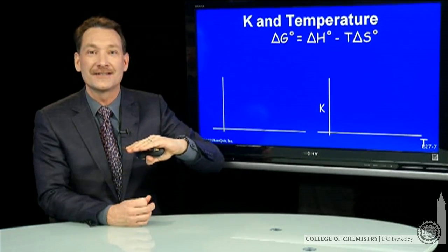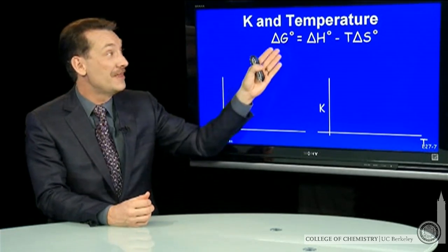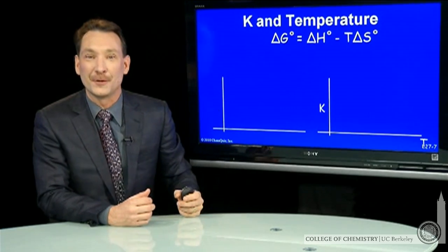We understand the relationship between free energy and temperature. The standard state free energy is ΔH minus TΔS. If ΔH and ΔS are independent of temperature, which they largely are, then ΔG is a linear function of temperature with a slope related to the entropy and an intercept related to the enthalpy.